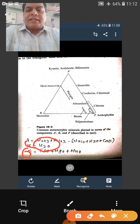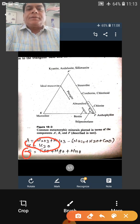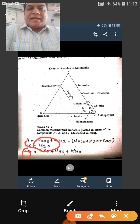So this is the AKF. These are the values that are calculated and then they are plotted in triangular graph paper.